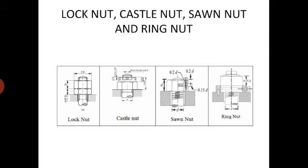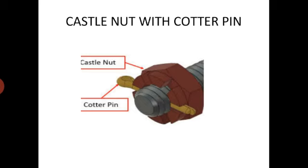These are four diagrams: lock nut, single nut lock, castle nut, sawn nut and ring nut. This diagram shows the 3D image of castle nut with cotter pin. Castle nut has a number of slots, and through these slots, cotter pin, split pin or locking pin is fixed for tightening. Castle nuts are used in such type of applications where an ordinary hexagonal nut is not suitable.